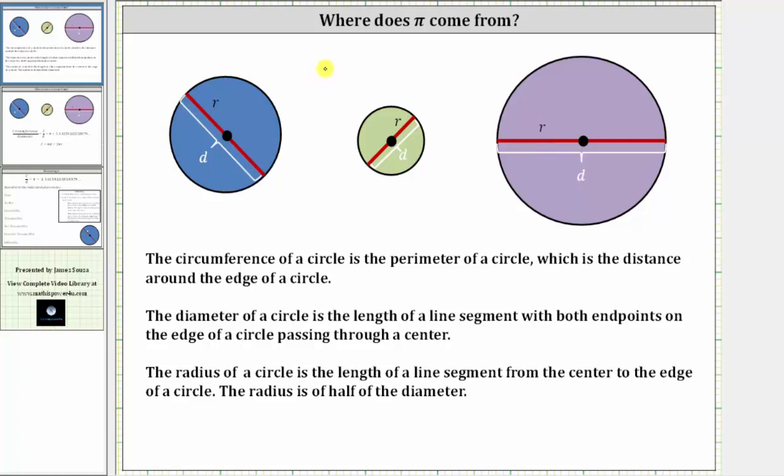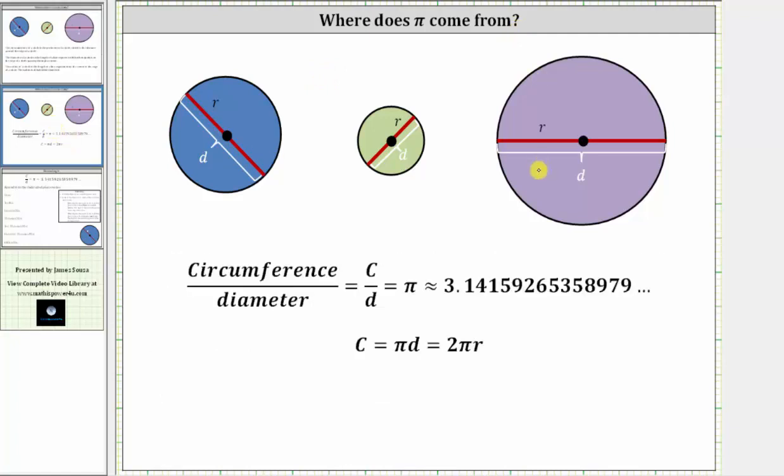And now let's discover where the number pi comes from. For any circle, regardless of its size, if we take the circumference, which again is the perimeter of the circle, and then divide by the diameter, which is the length of a segment with both endpoints on the circle passing through the center, we always get the same irrational constant, which is the number pi.